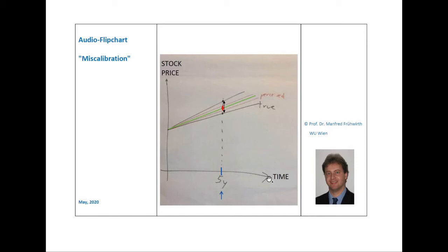For instance, the confidence interval for the stock price after five years, as perceived by a miscalibrated person, is shown by the ends of the two red arrows, which is smaller than the true confidence interval that is illustrated by the black arrows.